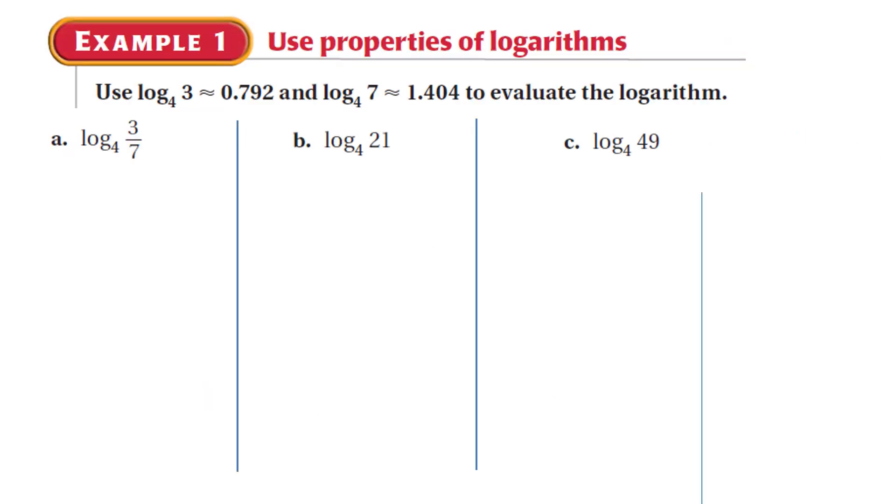Example. Use these two log approximations to evaluate each of the following. Again, these are approximations, as you can see by the symbol. So log base 4 of 3 sevenths, because we have division here, apply the quotient property of logs, and then we just substitute the values that we were given. And that gives us negative 0.612.